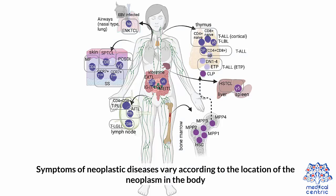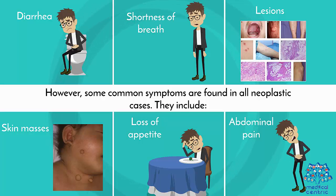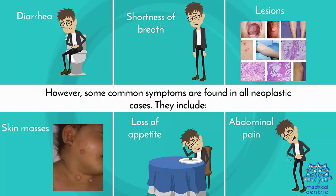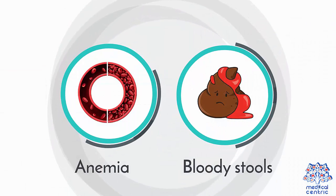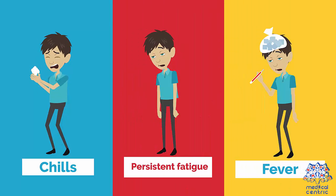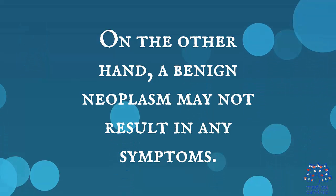Symptoms: Symptoms of neoplastic diseases vary according to the location of the neoplasm in the body. However, some common symptoms are found in all neoplastic cases. They include: 1. Diarrhea, 2. Shortness of breath, 3. Lesions, 4. Skin masses, 5. Loss of appetite, 6. Abdominal pain, 7. Anemia, 8. Bloody stools, 9. Chills, 10. Persistent fatigue, 11. Fever. A benign neoplasm may not result in any symptoms.